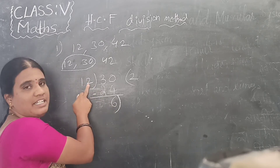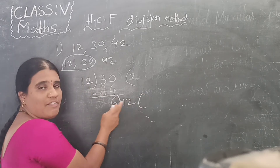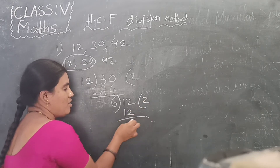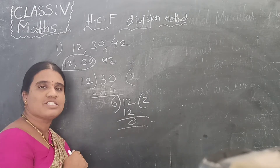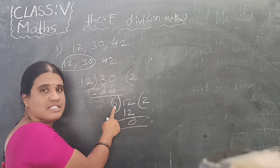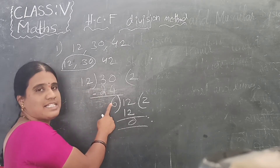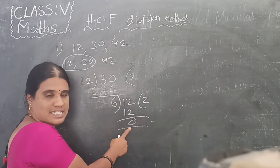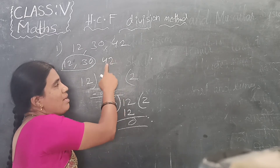We use the remainder and the divisor. Here the divisor is 12. In the 6 times table, when do you get 12? 6 times 2 is 12. So here you got the remainder as 0. When we did the division with 12, we got the remainder as 6. When we did the division with 6, we got the remainder as 0.